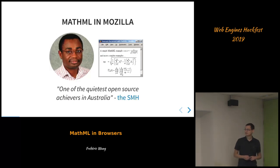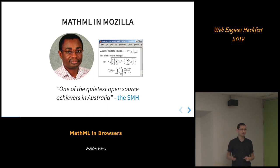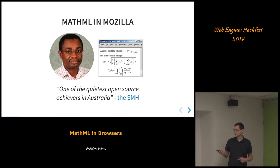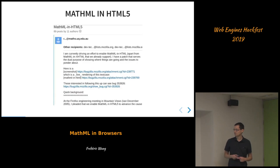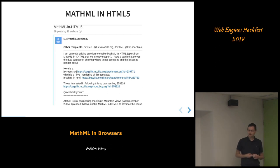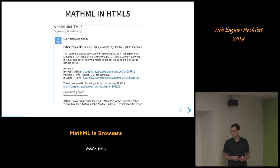In 1999, Roger Siege started to work on a MathML implementation in Mozilla. The first release happened in 2002 — Mozilla 1 — even before Firefox was ever released. He did a very good job and continued working on Mozilla until 2006. In 2005, he sent a proposal to the Mozilla mailing list, thinking about how to make MathML usable in HTML.